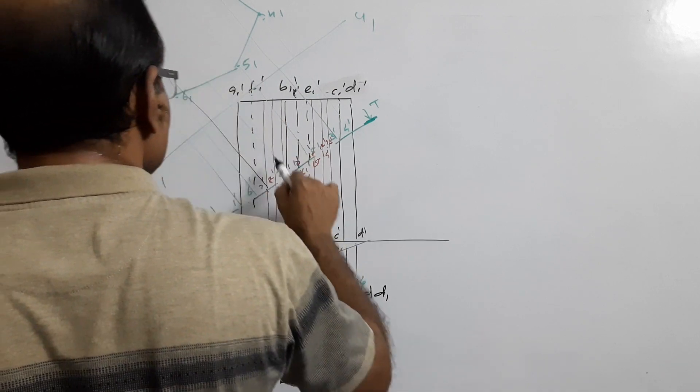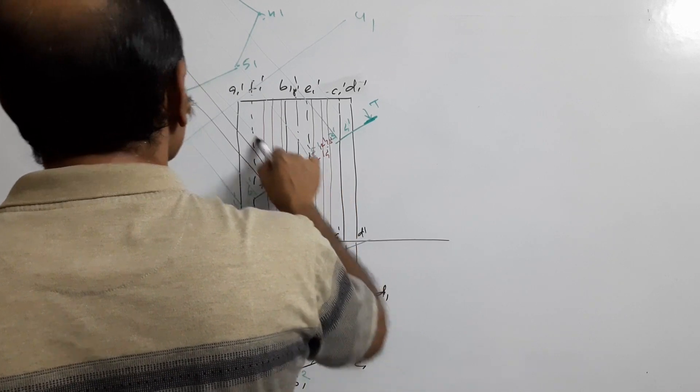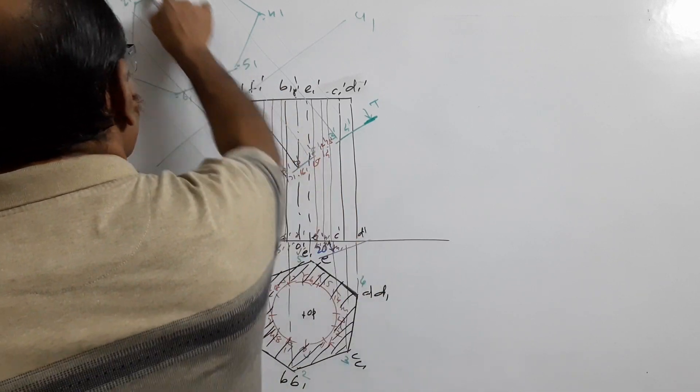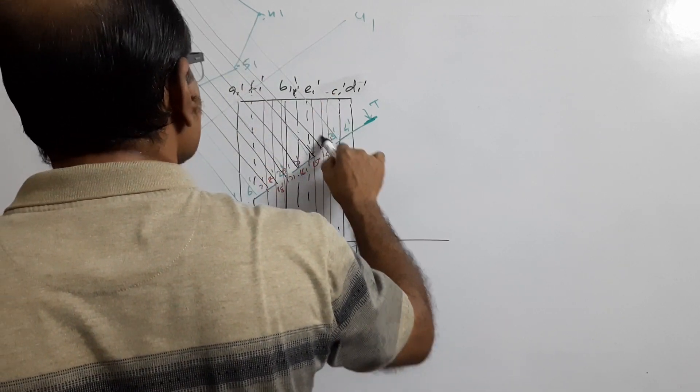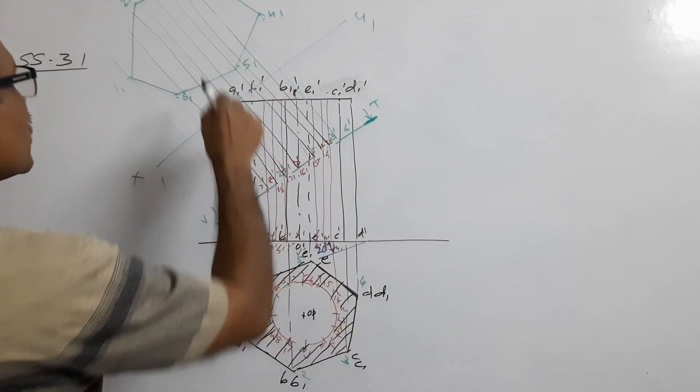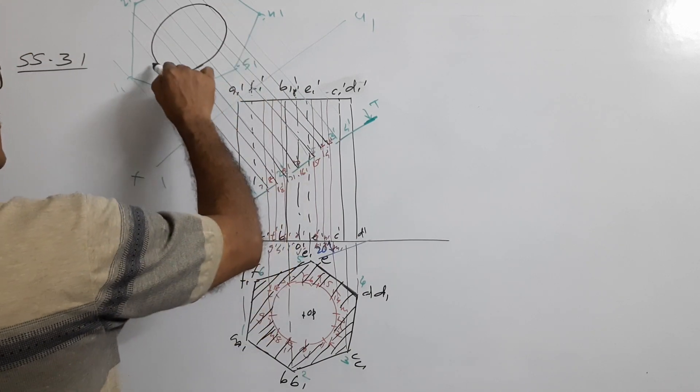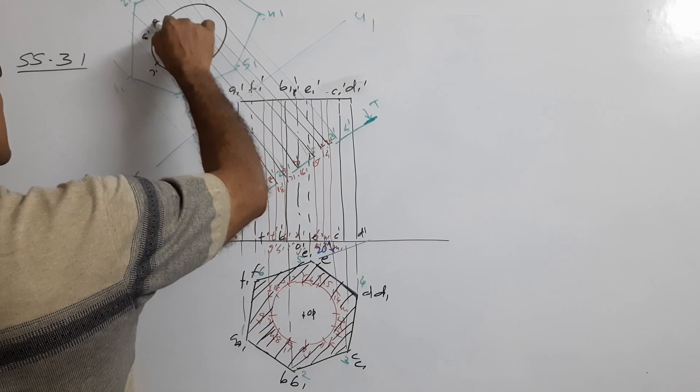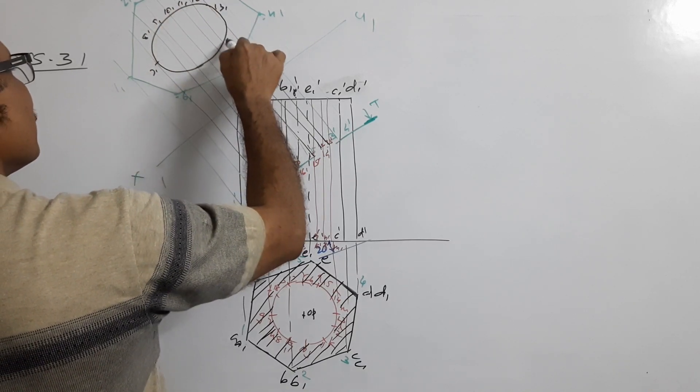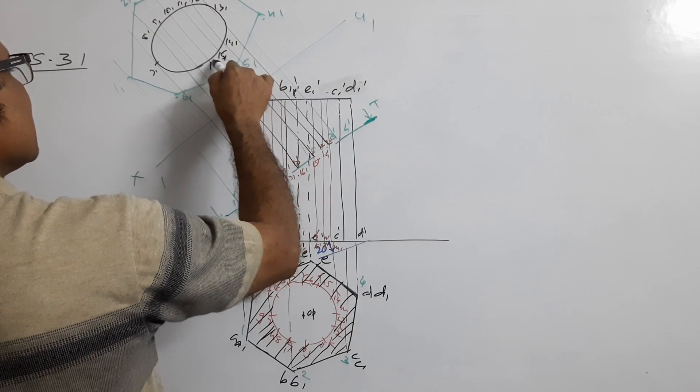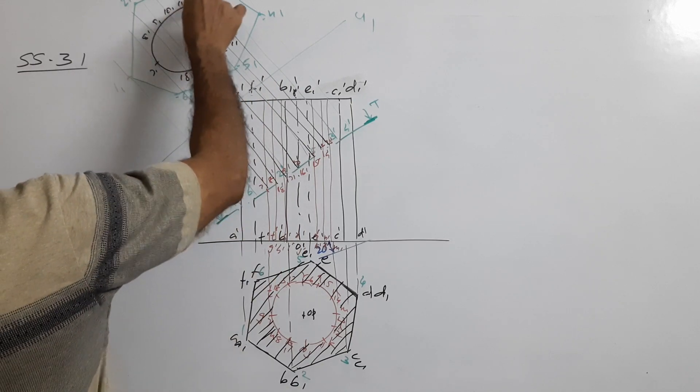Take the distance to the plan and draw an ellipse. Mark points 7-1, 8-1, 9-1, 10-1, 11-1, 12-1, 13-1, 14-1, 15-1, 16-1, 17-1, 18-1 in the true shape. Now hatch this gap in the true shape.